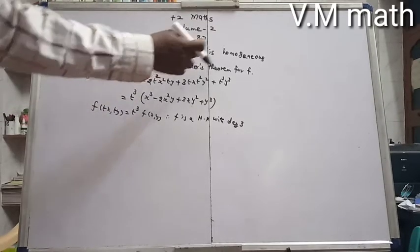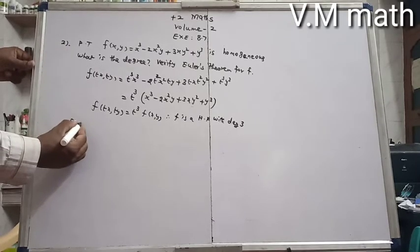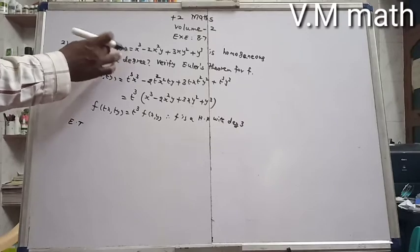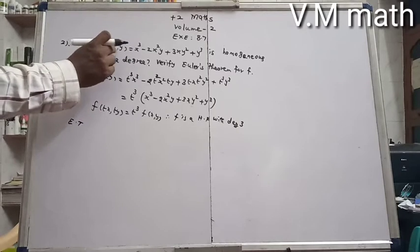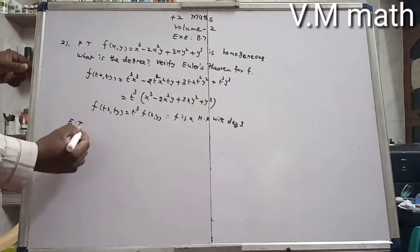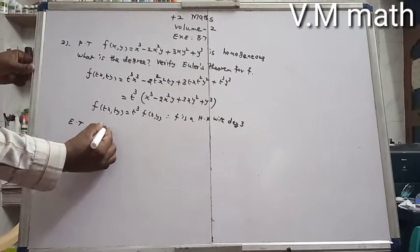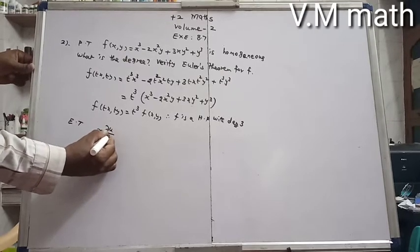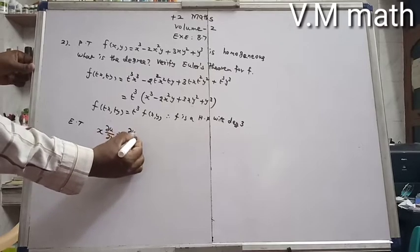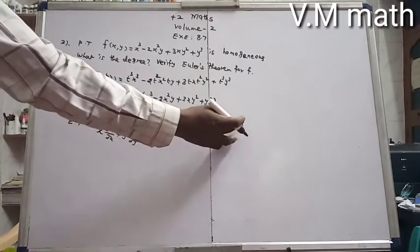Now we verify Euler's theorem. For a homogeneous function of two variables x and y with degree 3, Euler's theorem states: x · ∂f/∂x + y · ∂f/∂y = n · f, where n is the degree.